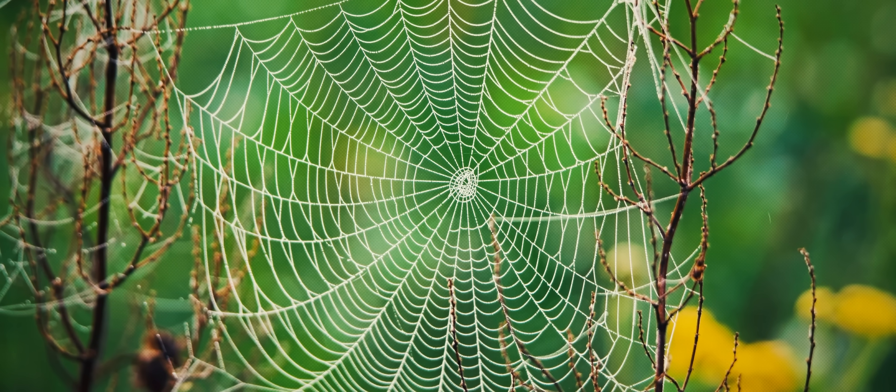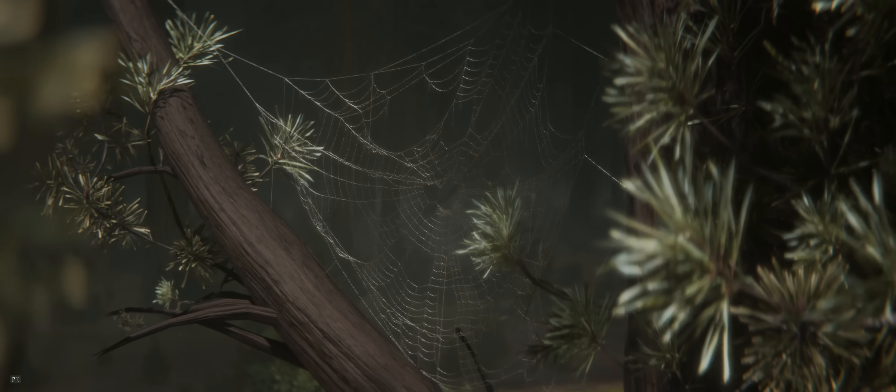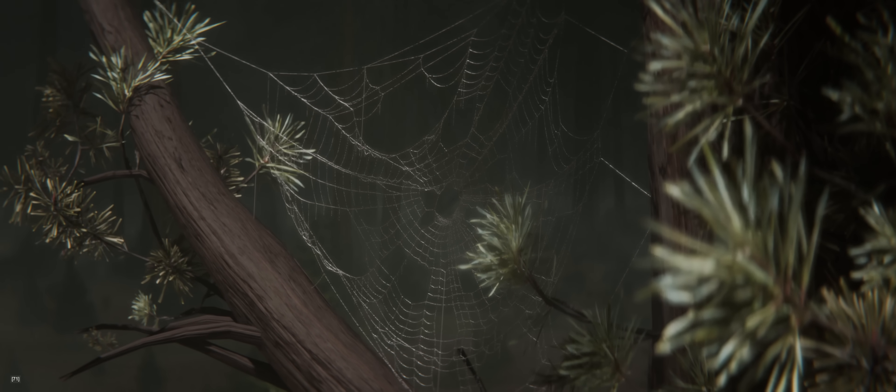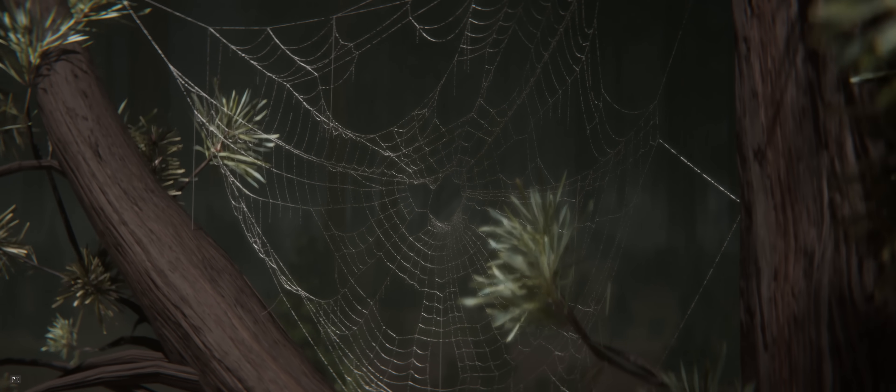Every forest has spiderwebs. Normally, they're neat and symmetrical like this. But here, in Chernobyl's most contaminated areas, the gaps in the strands are far too large. The patterns are warped and chaotic.